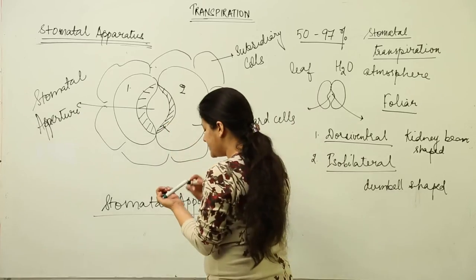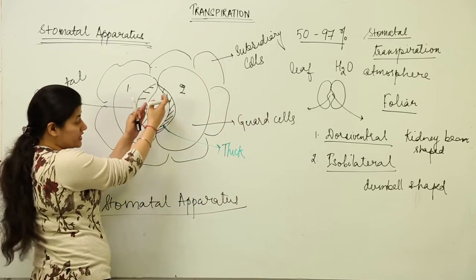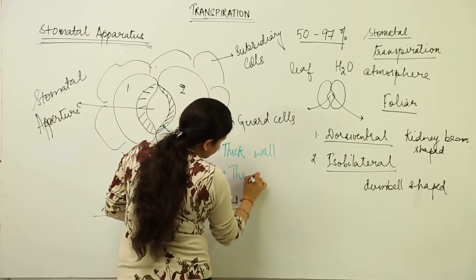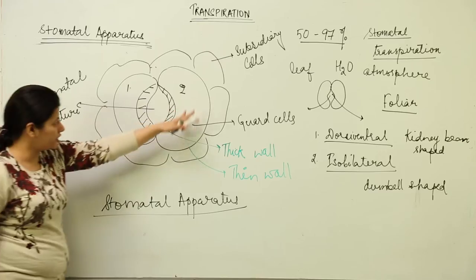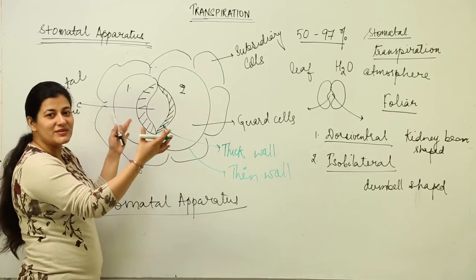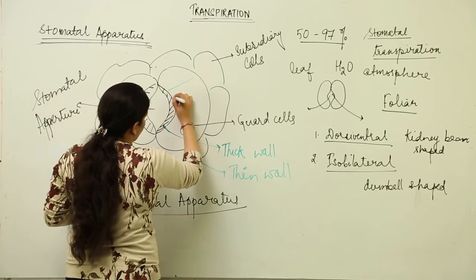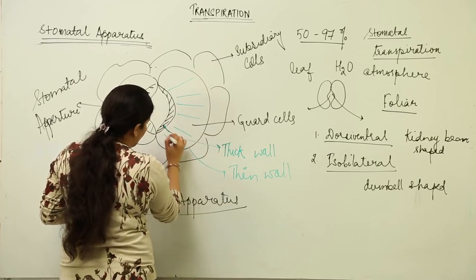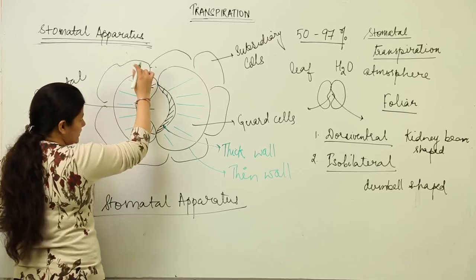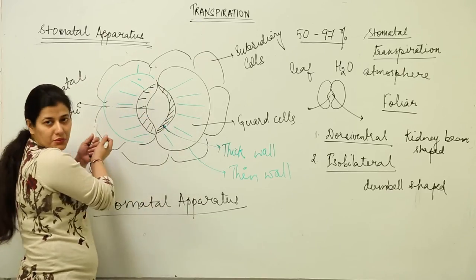Both guard cells have a thick wall as well as a thin wall. Towards the stomatal aperture or pore, the thick wall is present on the inner side, and towards the outer side we have a thin wall. The shape resembles a kidney bean. There are cellulosic microfilaments arranged inside the stomata which are elastic. When the guard cell becomes turgid, the thick wall inflates and pushes the thin wall outward, opening the pore.